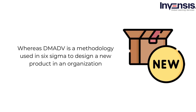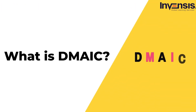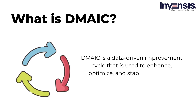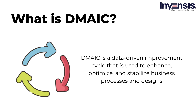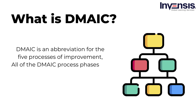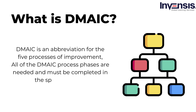Now let us start with DMAIC in detail. DMAIC is a data-driven improvement cycle used to enhance, optimize, and stabilize business processes and designs. The DMAIC improvement cycle is the primary instrument for driving Six Sigma initiatives. DMAIC is not limited to Six Sigma and may be utilized as a foundation for various types of improvement applications. It is an abbreviation for the five improvement processes: Define, Measure, Analyze, Improve, and Control. All DMAIC process phases are needed and must be completed in the specified order.